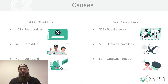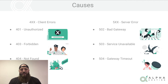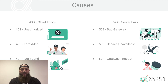On the 500 side — server errors. A 502 bad gateway error just means that your browser recognizes there's a proxy in between your browser and the actual website, which could be like a CDN, and it's not available — it doesn't have the information for the website you're looking for.